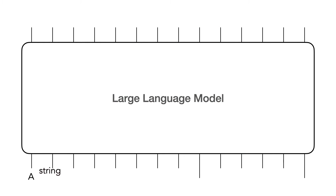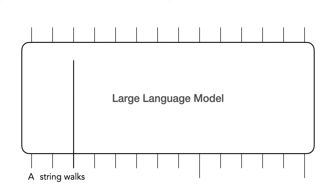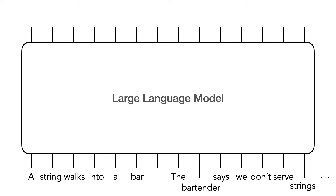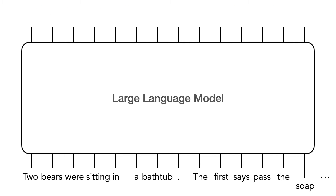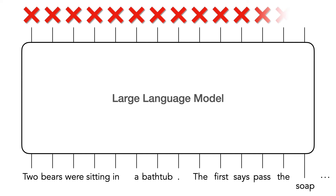Now we can use both good and bad jokes to improve our LLM. If the joke is good, the network will reinforce the weights that contributed to those words. If the joke is bad, the contributing weights are penalized.